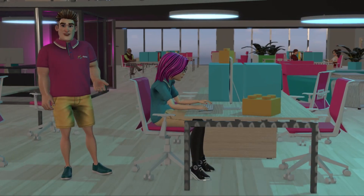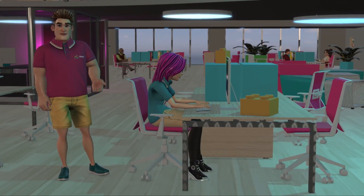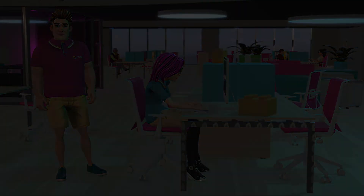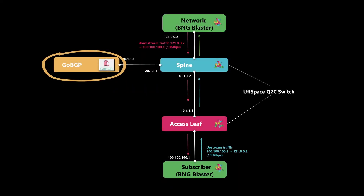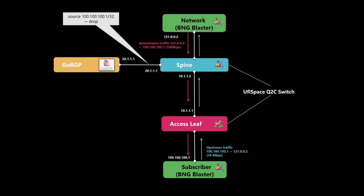Now let's go back to the diagram and see how we're going to inject the flow spec rule using GoBGP. From GoBGP, we will first try to impact the upstream traffic by sending a rule which says that whenever there is traffic matching the source IP of the subscriber, the packet should be discarded. On receiving such a rule in the spine, it will install the ACL and also send the BGP update to the leaf. The leaf switch also receives the update, and the leaf will start dropping the upstream traffic, because the upstream traffic is landing in the leaf first, before it even reaches the spine.